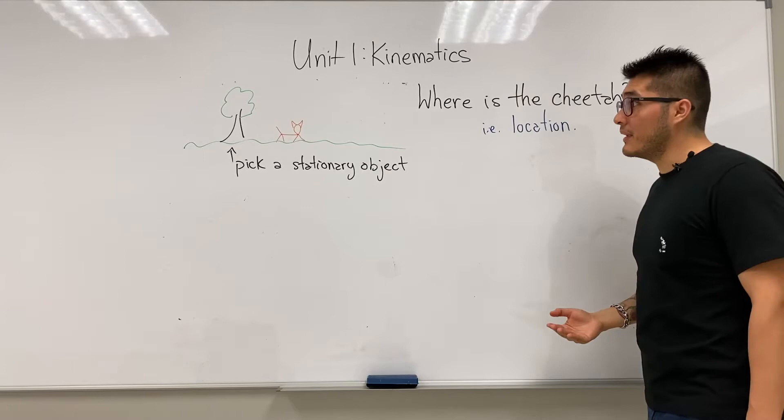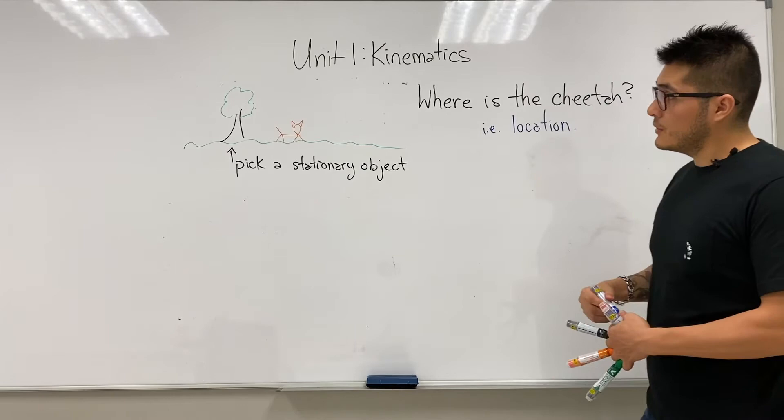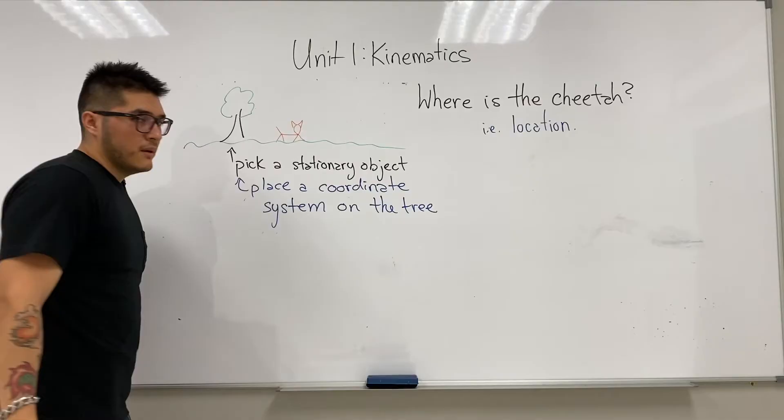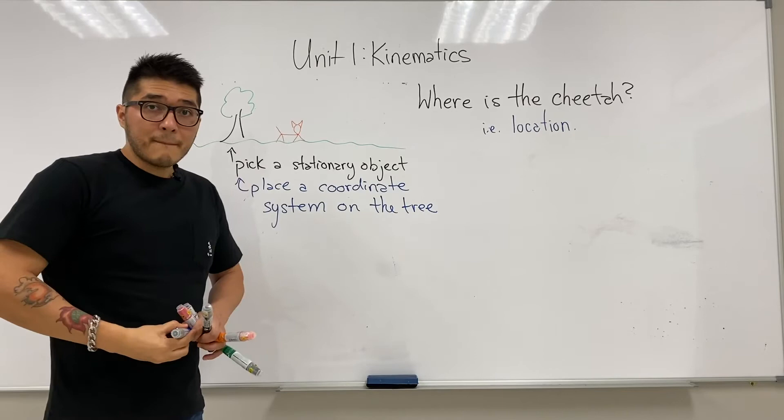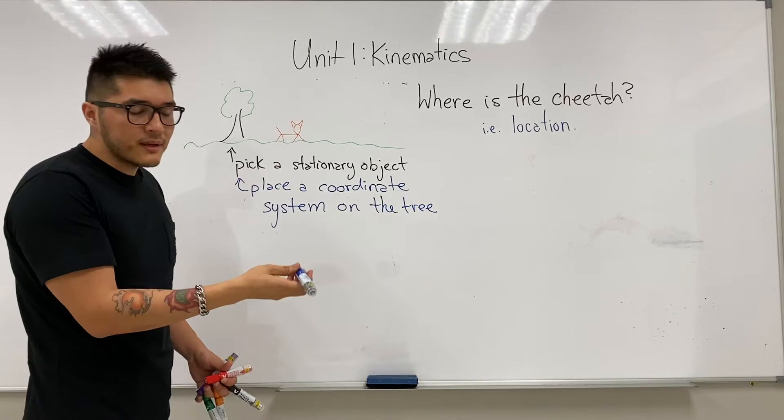We need to specify exactly how far away and in what direction. So what we introduce is a coordinate system. We pick a stationary object and we place our coordinate system on the stationary object. Once we've chosen the tree to be our stationary object, we can choose to place the coordinate system anywhere on the tree.